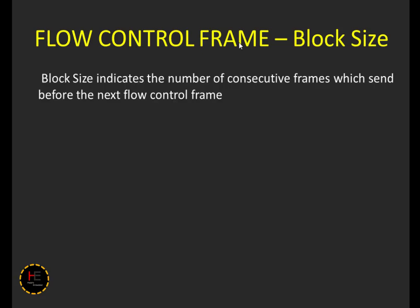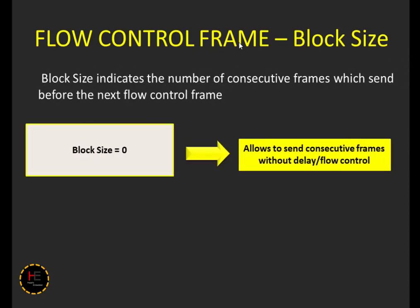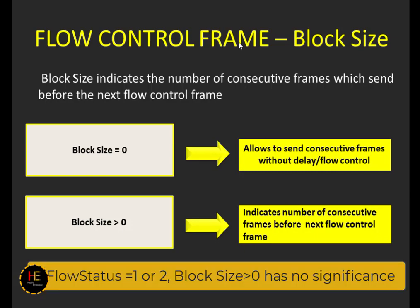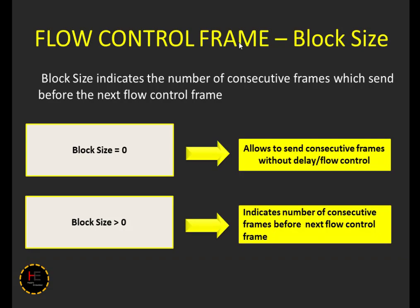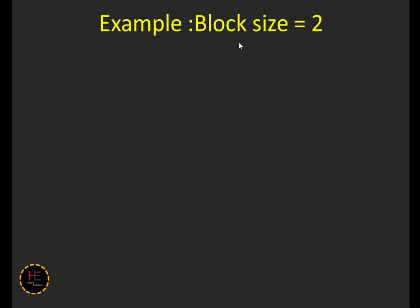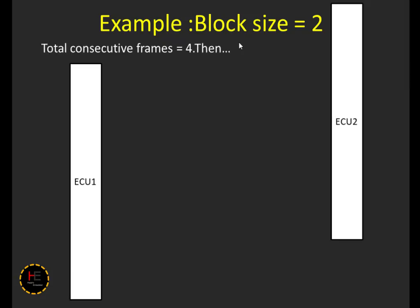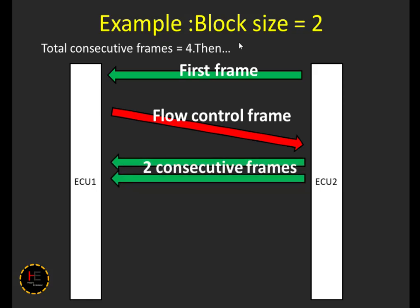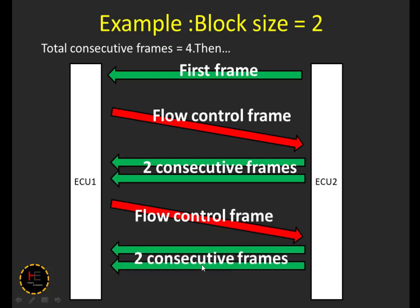The next field is block size. Block size indicates the number of consecutive frames to send before the next flow control frame. If it is zero, consecutive frames can be sent without any delay or flow control. If greater than zero, it indicates the number of consecutive frames to send before the next flow control frame. For example, if the block size is two and there are four consecutive frames: the first frame is sent, ECU sends a flow control frame, then two consecutive frames are received. After those two frames, ECU sends another flow control frame, and the last two consecutive frames are received.